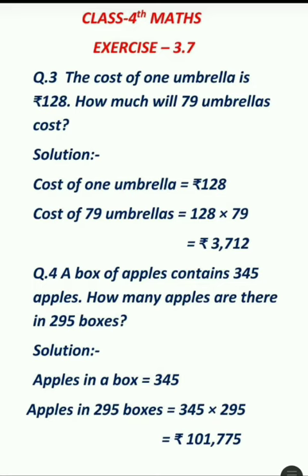The first question is: the cost of one umbrella is 128 — how much will 79 umbrellas cost? So if the cost of one umbrella is 128, you will have to find the price of 79. It is simple — here we use multiplication, which I have done.